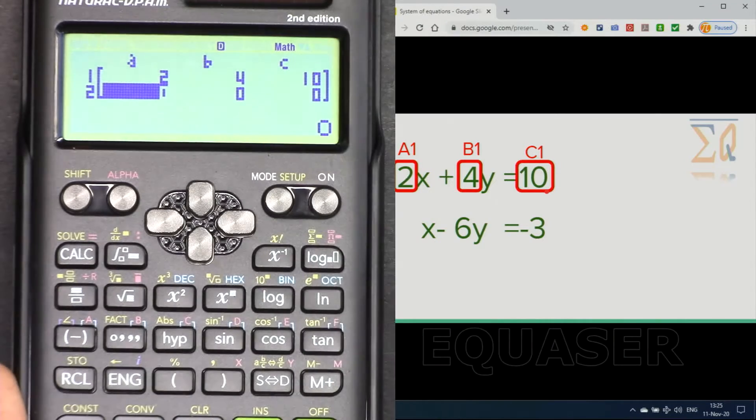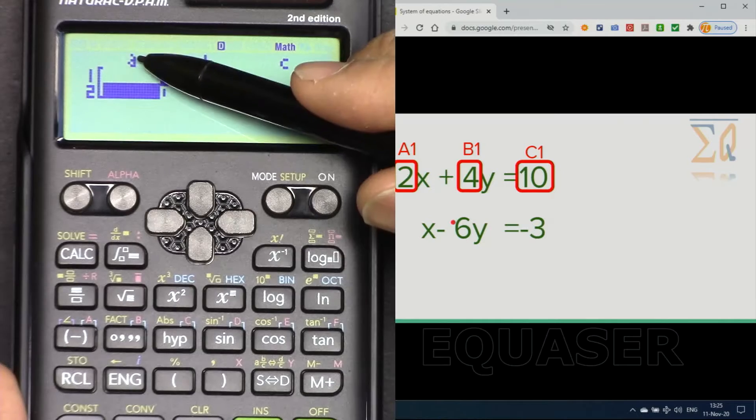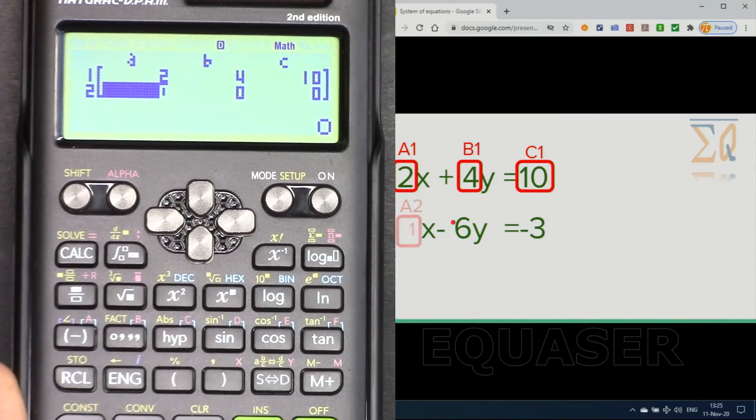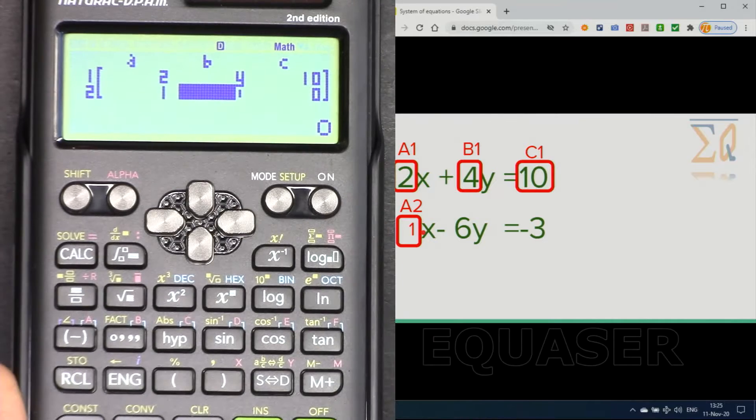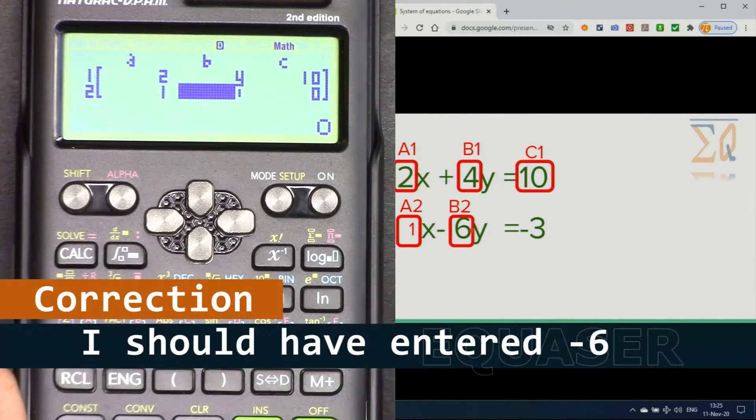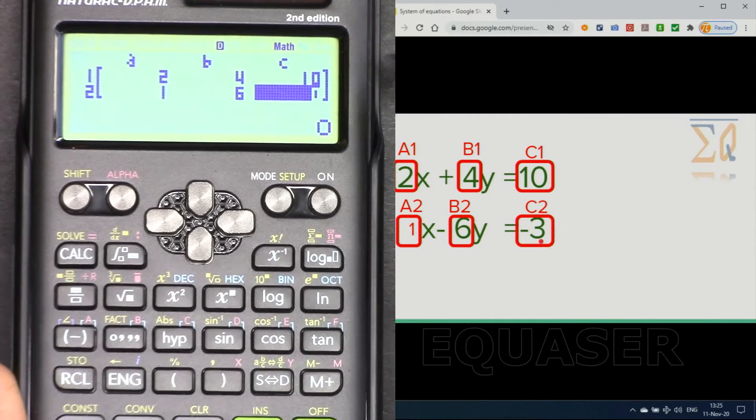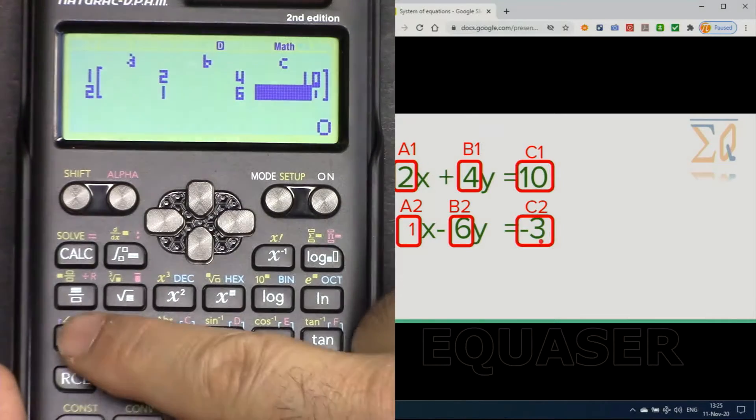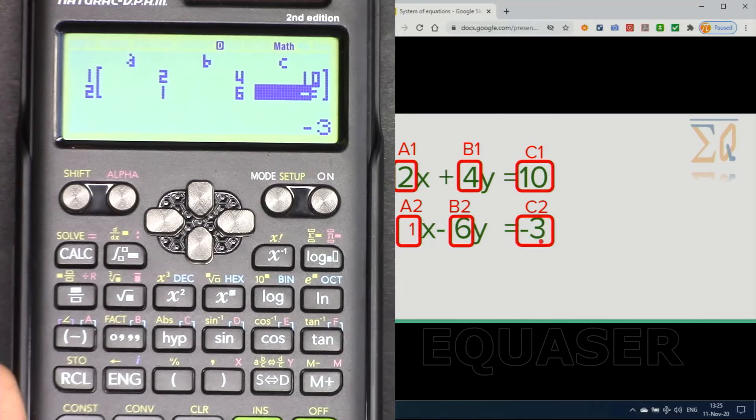As soon as I press equal sign it moves here, and as you can see two, four, and ten which I have highlighted here are entered. For a2 we enter one and then equal, it goes to b which is six and then press equal, and then minus three for c2. We enter this minus and then three and press equal.